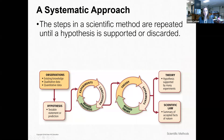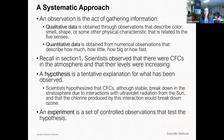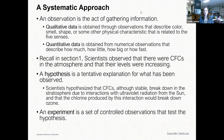An observation is the act of gathering information. You have two types of data: qualitative and quantitative. Qualitative talks about the quality of something; quantitative talks about the quantities. Qualitative data is obtained through observations that describe color, smell, shape, or some other physical characteristic related to the five senses — things we can't quantify, like 'my shirt is gray' or 'I am medium height.' There are no numbers attached.